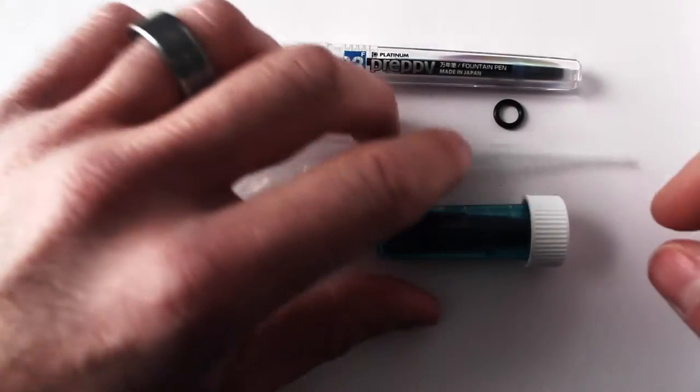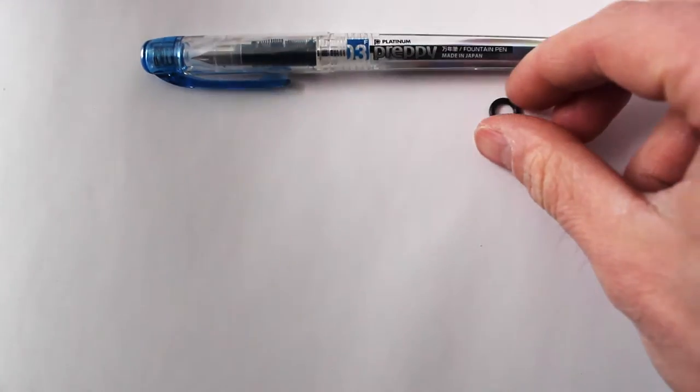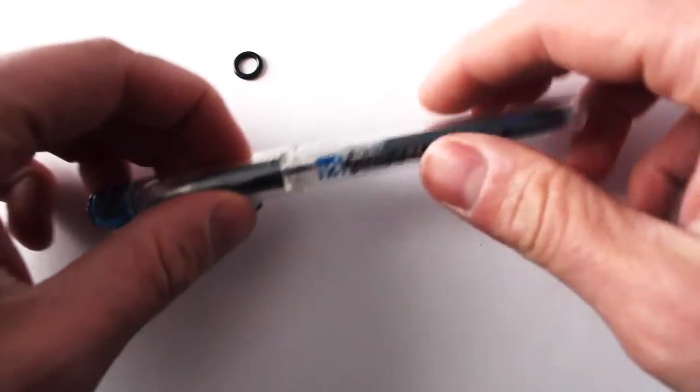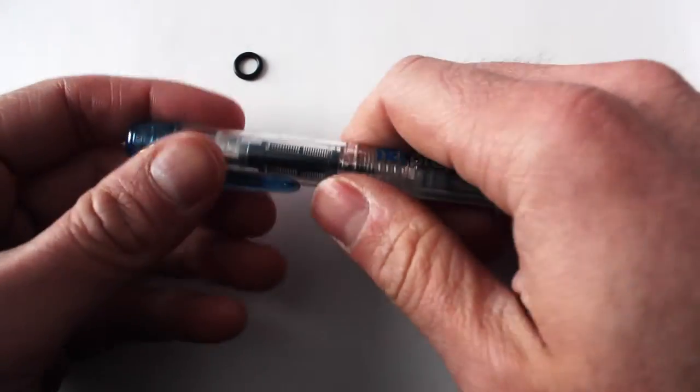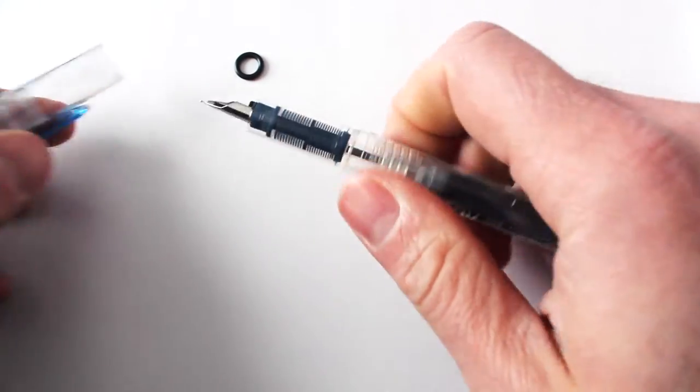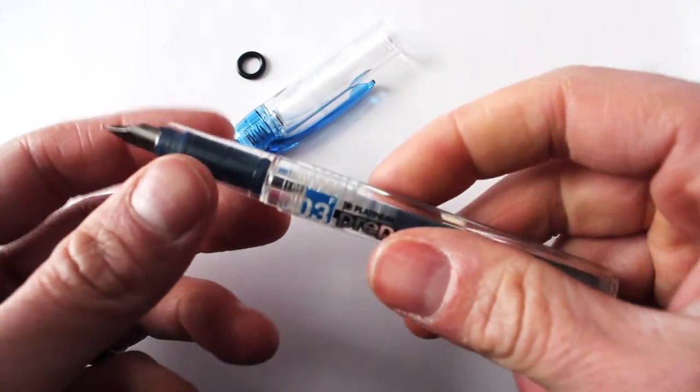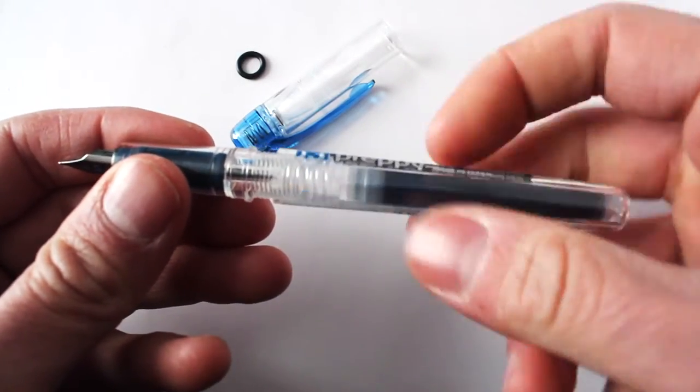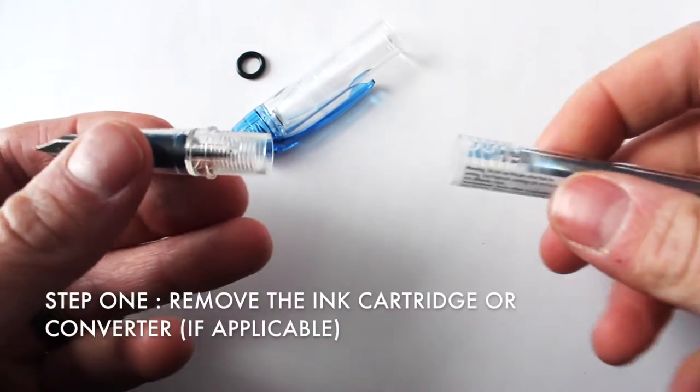Now we're going to get rid of everything out here and we're just going to focus in on the pen first. To prime the Preppy we're going to remove the cap, take off the front section, and then remove the ink cartridge that's inside there.